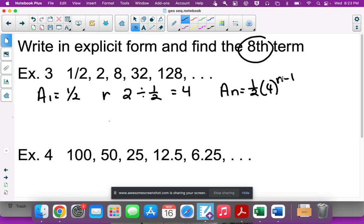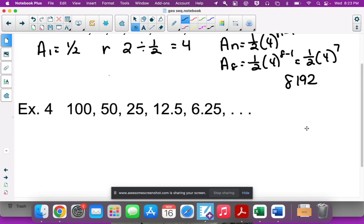So 1/2 times 4 to the (8-1), which is 1/2 times 4 to the 7th power. You should get 8,192. Pretty big! These numbers are going to get really big really fast or really small really fast; that's just the way they work.